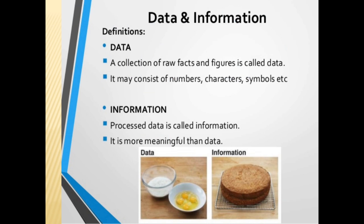Let's understand what is data and information. A collection of raw data and figures is called data. It cannot be used to draw any conclusion. It may consist of numbers, characters and symbols etc. Processed data is called information, and it is more meaningful than data.